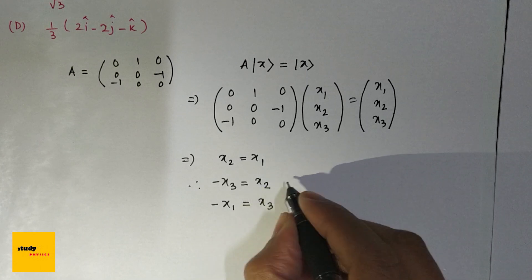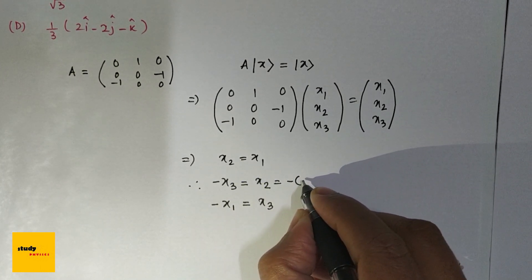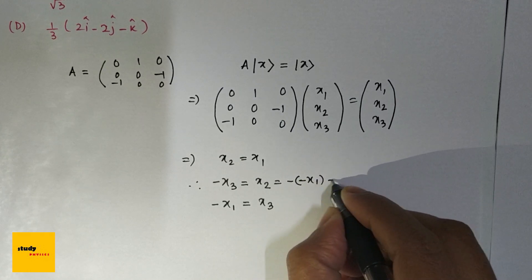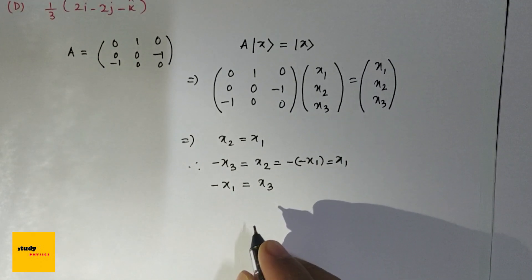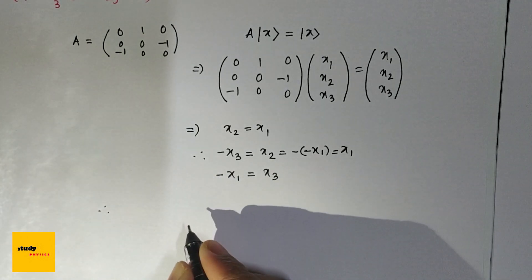minus x₁. So we can write this as minus of minus x₁, which is x₁. And this is minus x₁.